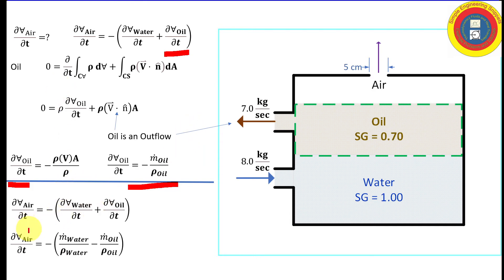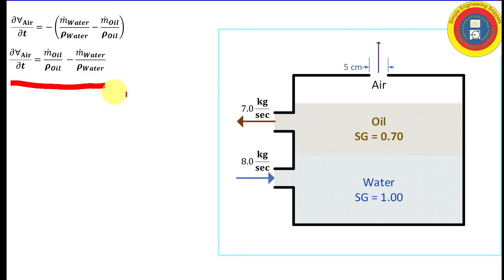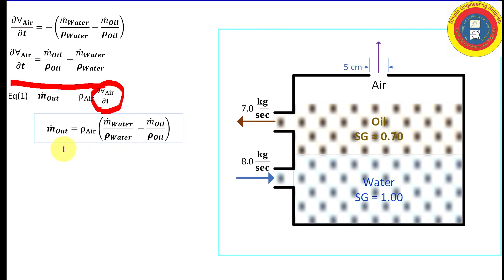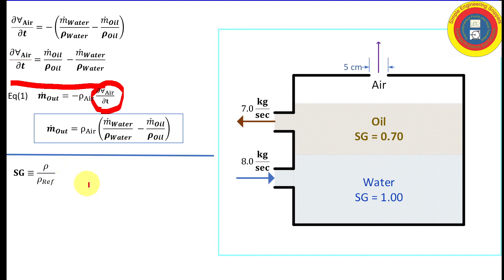Substituting into the top equation and simplifying, we get the time rate of change of volume of air. Recalling Equation 1, the mass flow rate of air out equals density of air times (mass flow rate of water divided by density of water, minus mass flow rate of oil divided by density of oil). We calculate densities using specific gravity — reference density is 998.2 kg/m³. For oil with SG = 0.7, multiply by 0.7 to get oil density. Water's SG = 1, so its density equals the reference density.